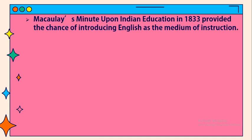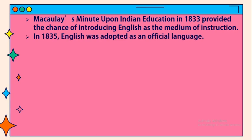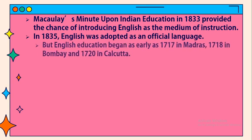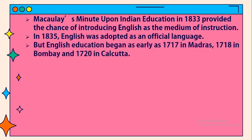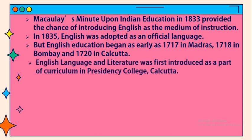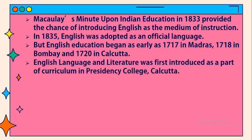Macaulay's Minute upon Indian Education in 1833 provided the chance of introducing English as the medium of instruction. In 1835, English was adopted as an official language. However, English education had begun as early as 1717 in Madras, 1718 in Bombay, and 1720 in Calcutta. English language and literature was first introduced as part of the curriculum in Presidency College, Calcutta.